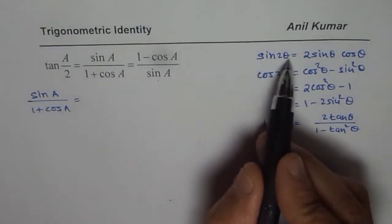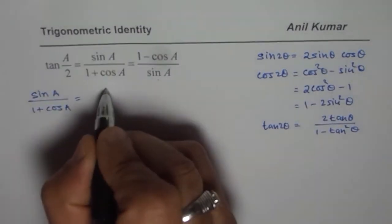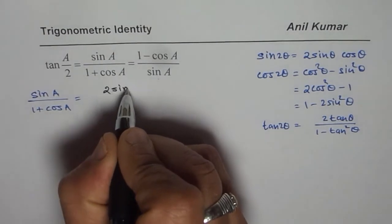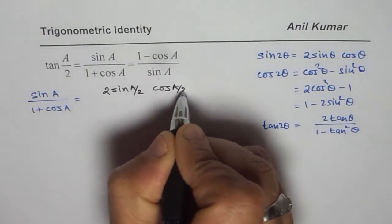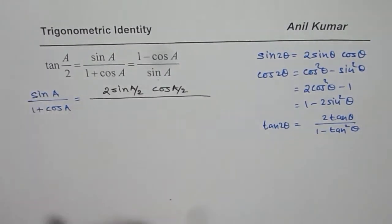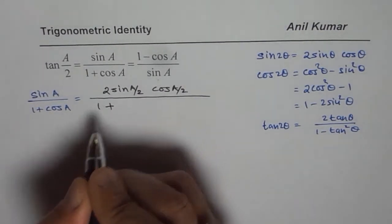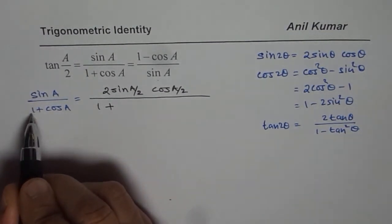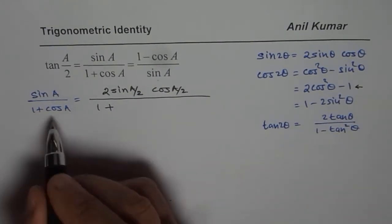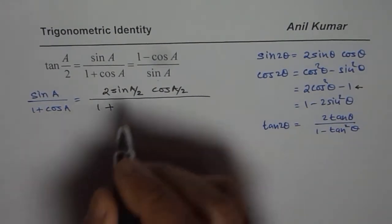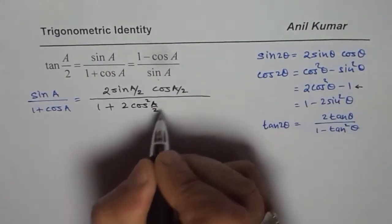Applying sine 2 theta equals 2 sine theta cos theta, I can write sine a as 2 times sine(a/2) cos(a/2). Now in the denominator we have 1 plus cos a. Since we have 1 on the positive side, it is a good idea to use the form cos 2 theta equals 2 cos squared theta minus 1. So I will write cos a as 2 cos squared(a/2) minus 1.